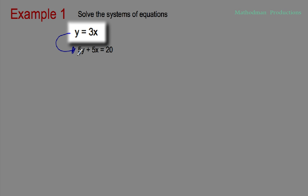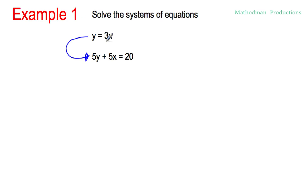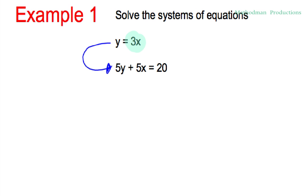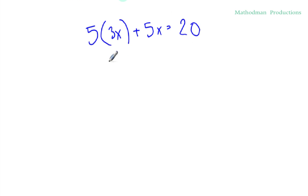So for wherever you see a y right there, you're gonna replace it with 3x. So I see a y right here. I'm gonna replace that with 3x. Substitute it in. 5 times 3x plus 5x equals 20. And you're probably asking, what's the point of doing that? Well, I only have to deal with one variable here instead of x and y. So it's possible to find that value for x. Simplify and solve.